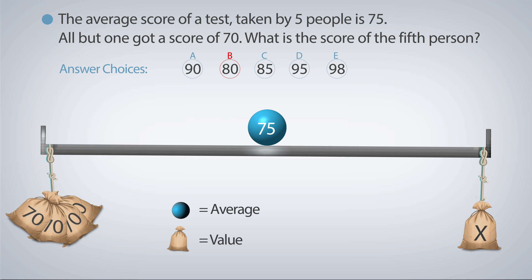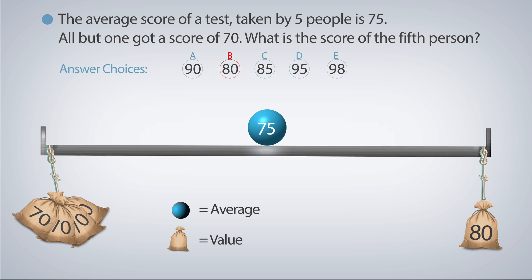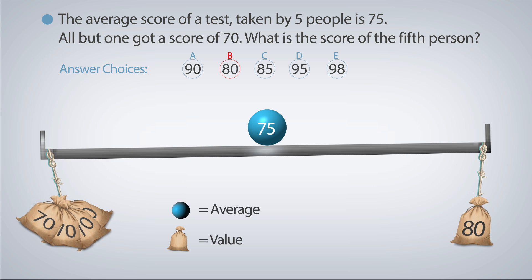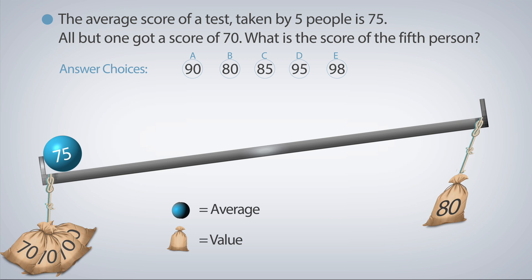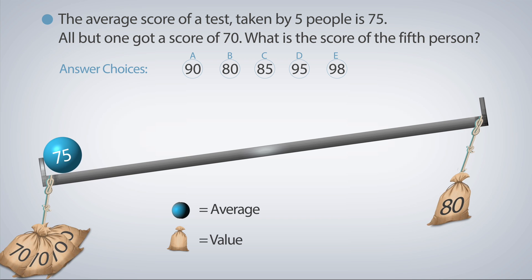A common mistake is to choose option B, as 75 is the average of 70 and 80. However, there are several values of 70 and only a single value of 80, so the balance is weighted towards 70.